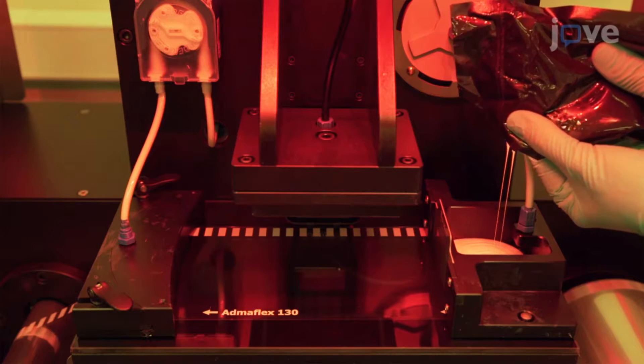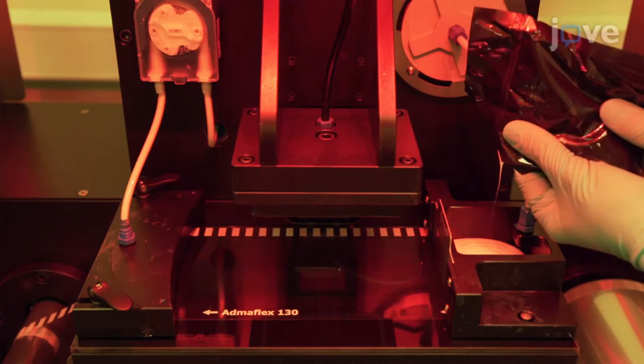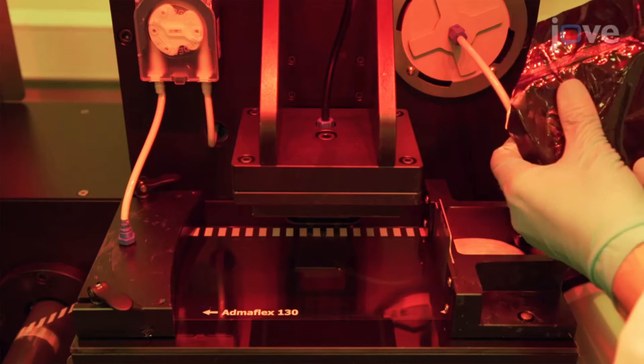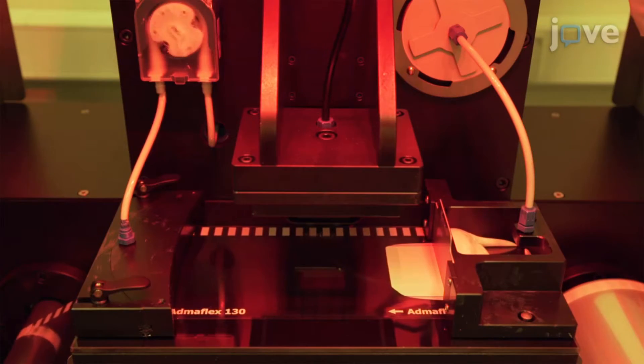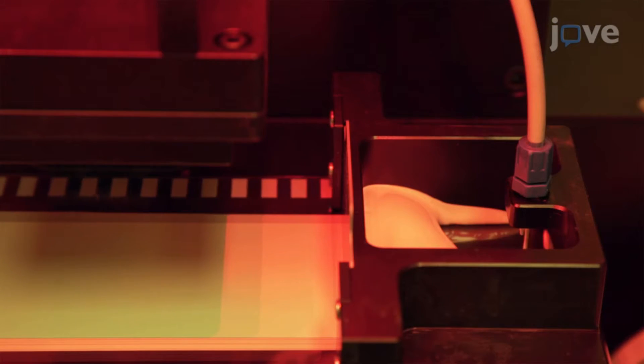Then, fill the printing device reservoir about halfway with the prepared ceramic resin slurry. Pump the slurry through the system until it starts refilling the reservoir.